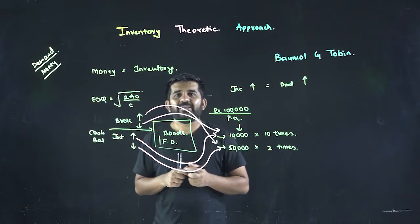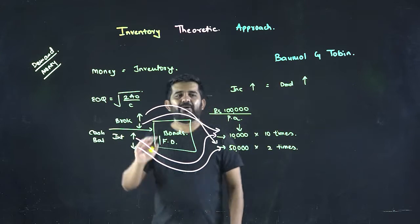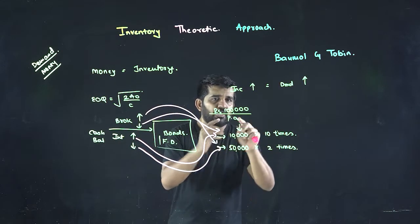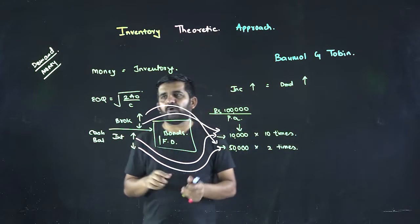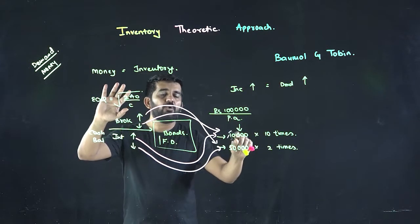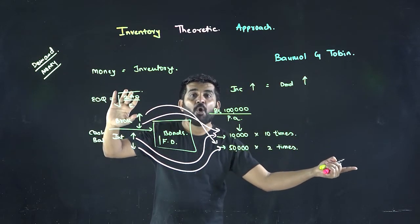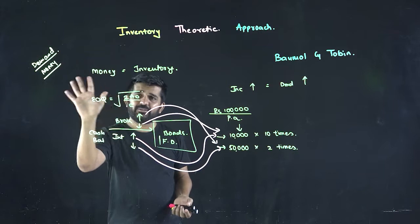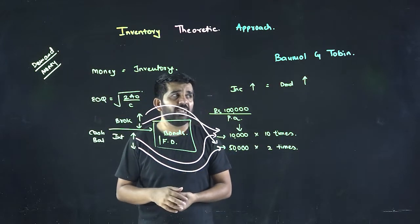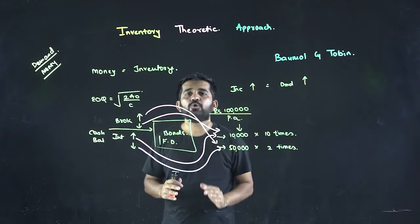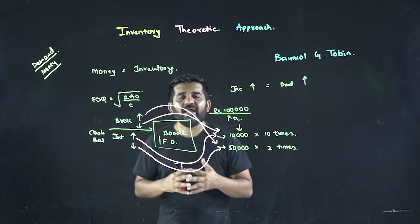And it explains - you can find out once we do the concept of costing - we can easily find out how much amount at a time you should be keeping in the bond. And that will be the concept of economic ordering quantity. This is inventory theoretic approach for demand for money.